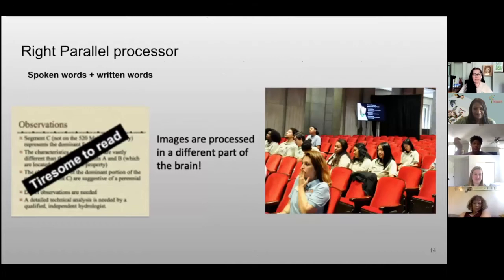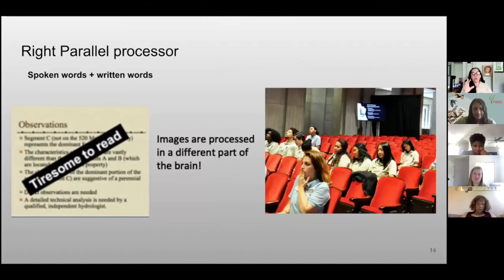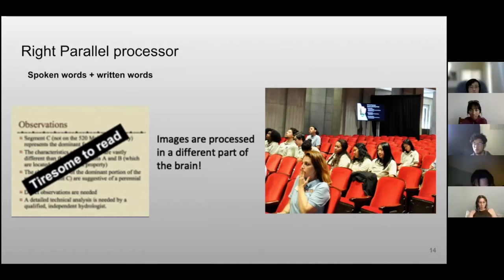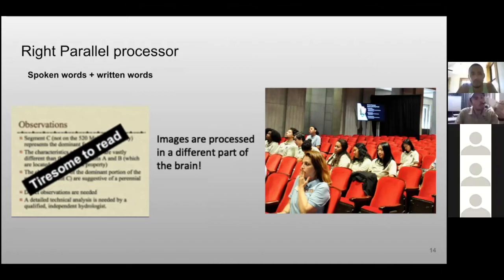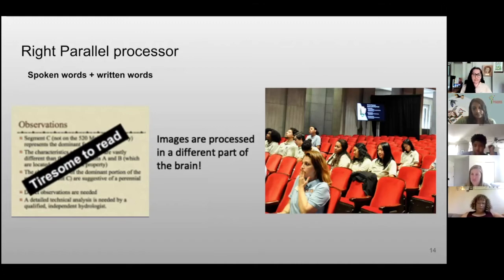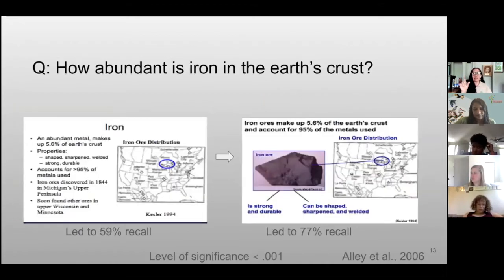The right parallel processor in our brain cannot handle spoken words and written words at once — either you read or you listen, not both. Here's an actual photo from a workshop — look at the audience: eyes closed, because we cannot listen and read at the same time. We process images in a different part of the brain. The suggestion: use images and a statement heading, and you — the speaker — will be the presentation.